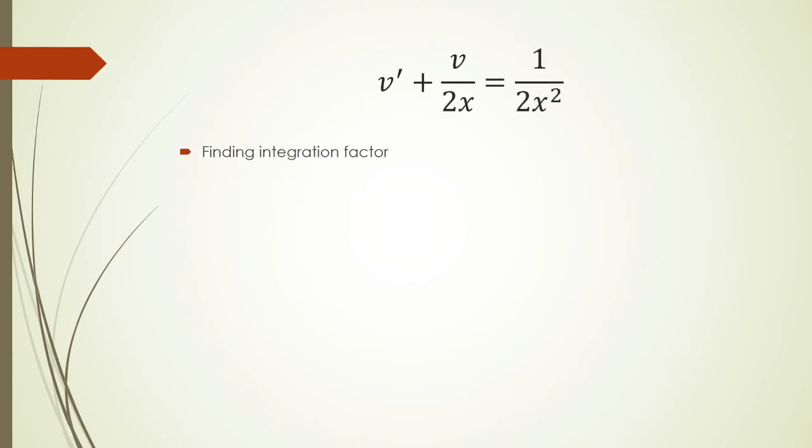In order to solve this, we want to find an integration factor. So the integration factor will be e to the integral 1 over 2x, which solving will be square root of x. We're going to take this integration factor and multiply both sides with it, and that's what we get.